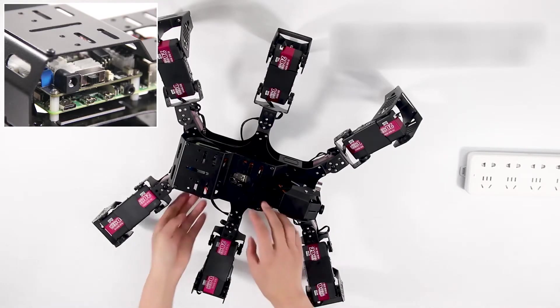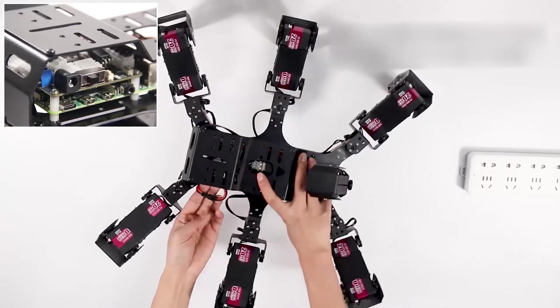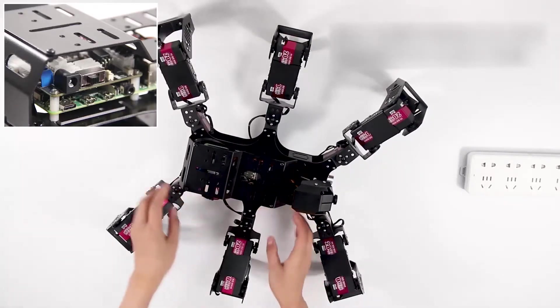Check the body power switch once again. Okay, switch on the Raspberry Pi expansion board on the back.